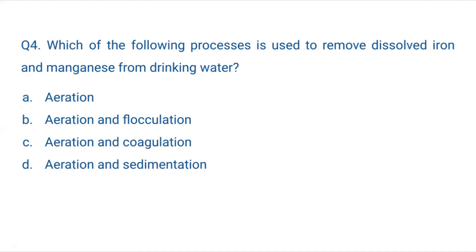Question 4: Which of the following processes is used to remove dissolved iron and manganese from drinking water? The correct answer is D — aeration and sedimentation. When you aerate the water, it oxidizes the iron and manganese present in it. The oxides are heavier, they settle down at the bottom during sedimentation, and then the clear water is removed from the top.